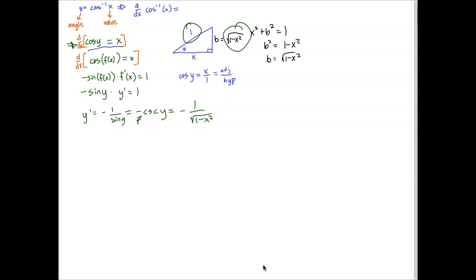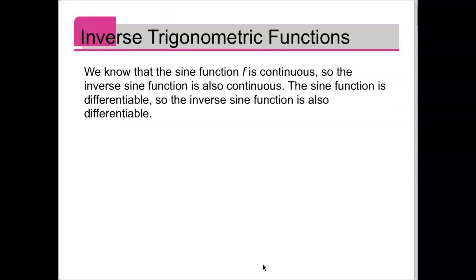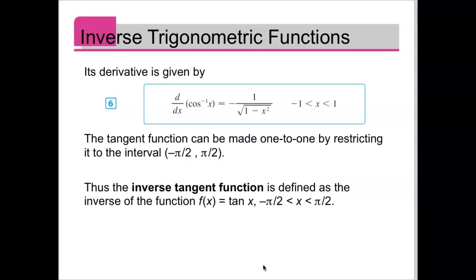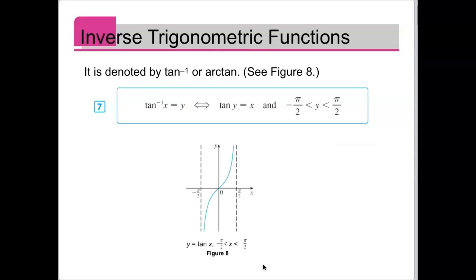Now let's barrel through inverse tangent. Tangent is periodic — not a continuous wave like sine and cosine, it has vertical asymptotes — but it still repeats and still doesn't pass the horizontal line test, so we restrict its domain. For convenience, we do that as close to the origin as possible.